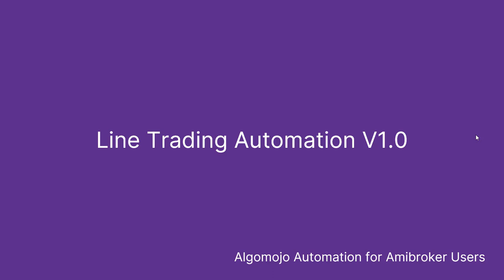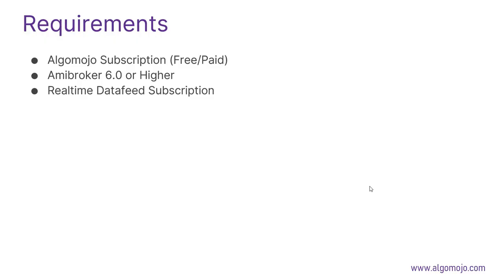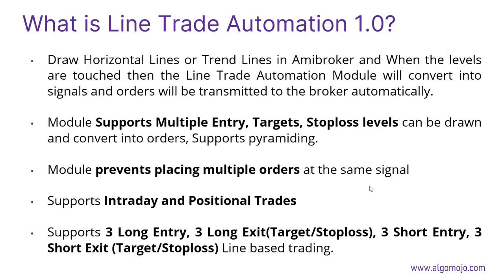Hey everyone, this is Rajendran here. In this tutorial we're going to look into one of the most demanded trading tutorials on how to use line-based trading for automation — how to draw lines and how we can convert those lines into automation using AlgoMojo. Particularly if you're an AMI Broker user, the module has a couple of requirements: an AlgoMojo subscription (free or paid), the AlgoMojo bridge, AMI Broker 6.0 or higher, and a real-time data feed subscription.